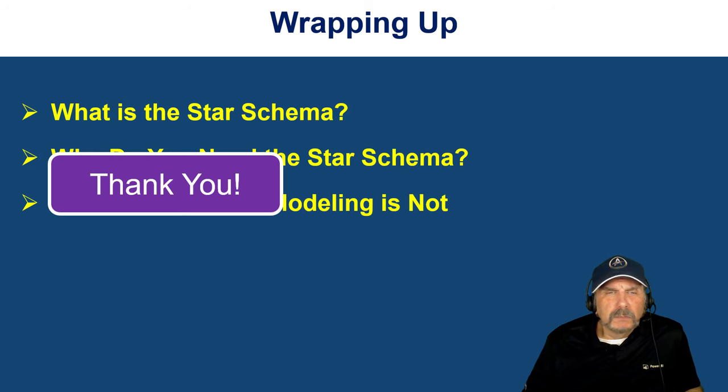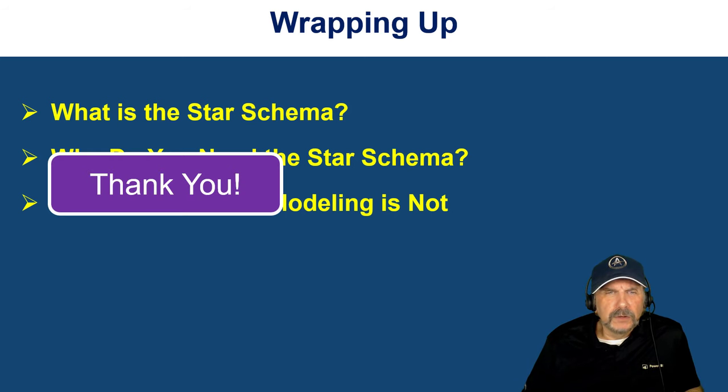So wrapping up: we talked about what a star schema is — a simplified data model that's great for business analytics, AI, or analysis. Why do you need it? It gives you immediate business value, eliminates complexity found in other modeling techniques, and is highly maintainable and extensible. Dimensional modeling is not about building a central enterprise-wide data warehouse — it starts at the bottom, builds data marts, and aims for shared usability across data marts as a long-term goal. And that's it for this time. Please like, share, subscribe, and until next time, I'm pulling for you — we're all in this together.